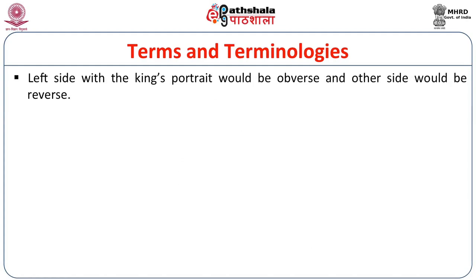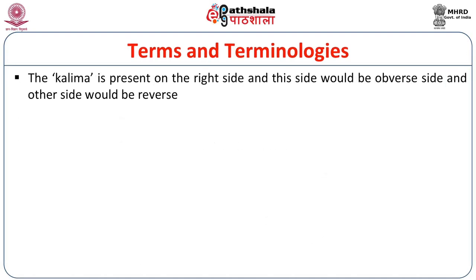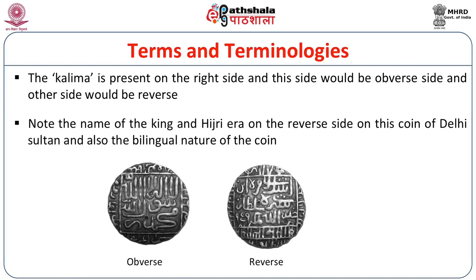On the Gol'er coin of Shivajira of Shinde, the side with the king's portrait is obverse, and the reverse shows the Shaka Hindu calendar date. On Muslim coins, the Kalima is on the obverse side, as it is the most important feature of Muslim coins. On the Delhi Sultanate coin, the king's name and Hijri era are on the reverse, and one can notice the bilingual nature of these coins.